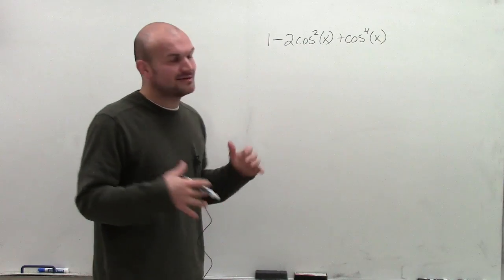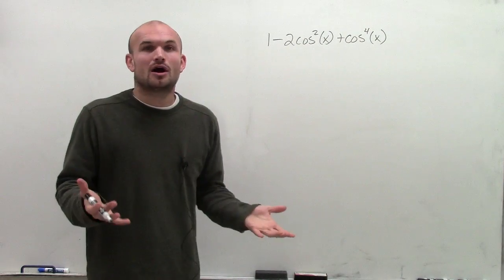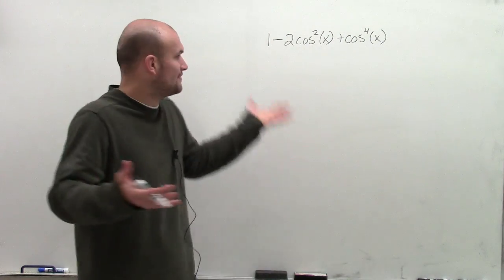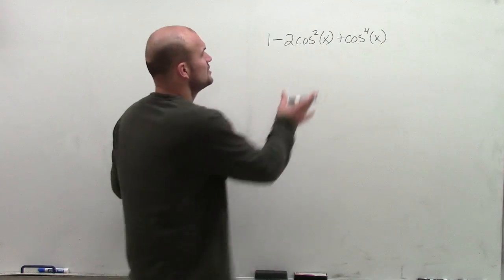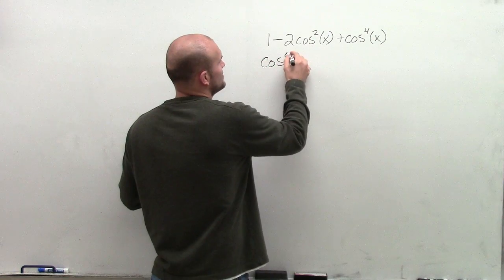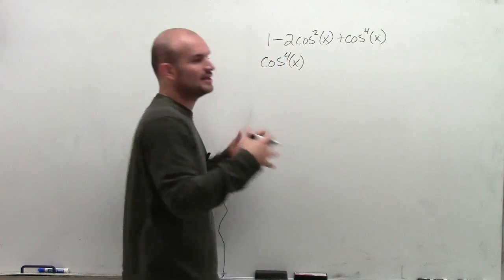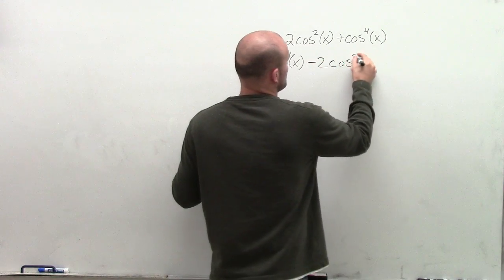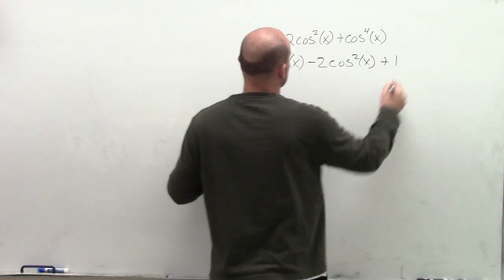So to factor this, by looking at it, might not be immediately apparent. But what I like to always do is rewrite this in descending order. So I have cosine to the fourth of x minus 2 cosine squared of x plus 1.